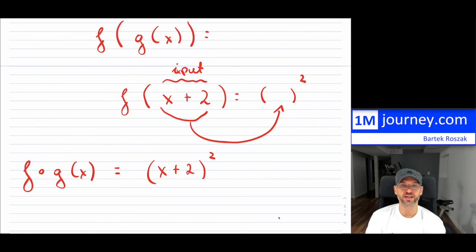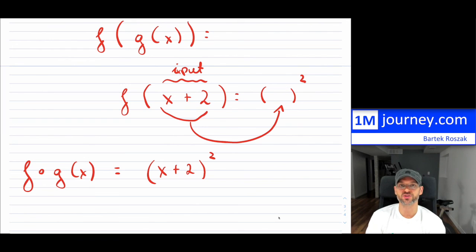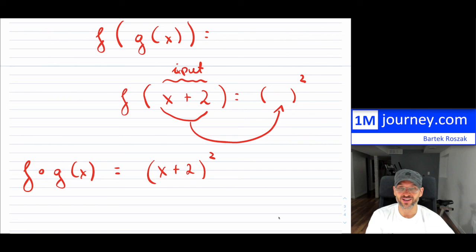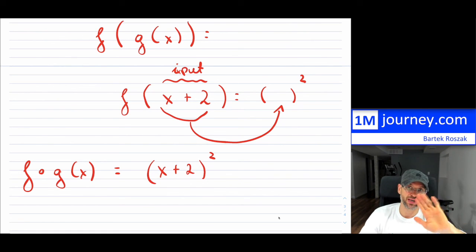You'll start seeing these types of notations more and more when working with functions. Remember: a function is just a special type of relation where each input has a unique output — it won't have multiple outputs. Thanks for watching, and we'll see you in a future video on functions. Bye everybody!